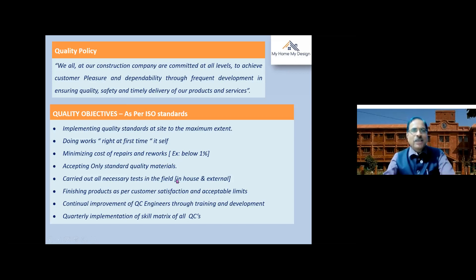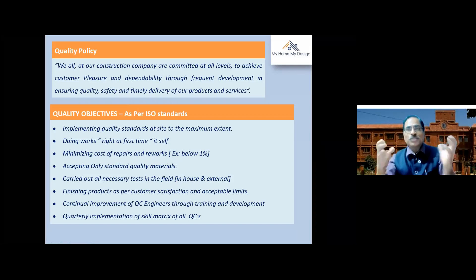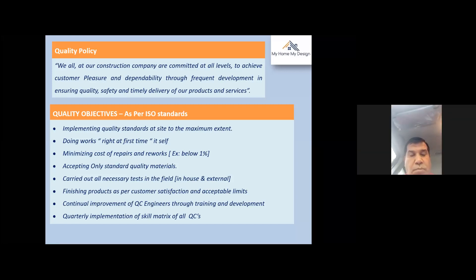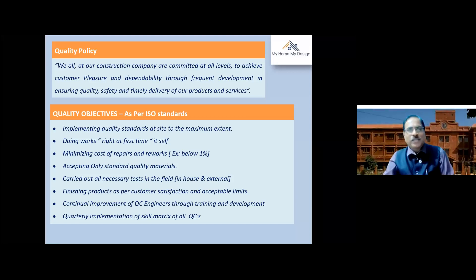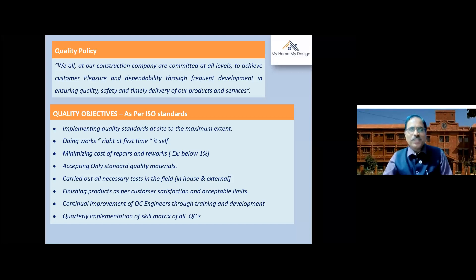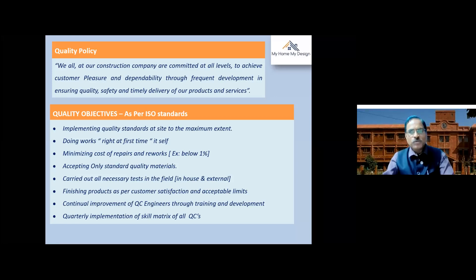Accepting quality standard materials only is very, very important. As a thumb rule in basic civil engineering, 70 percent is the material component and 30 percent is labor or workmanship. If 70 percent of the component is itself inferior in quality, we cannot give quality assurance for the construction. So we need to accept all standard quality materials right from excavation till handing over the keys. All necessary tests in the field, in-house, and external labs must be carried out.